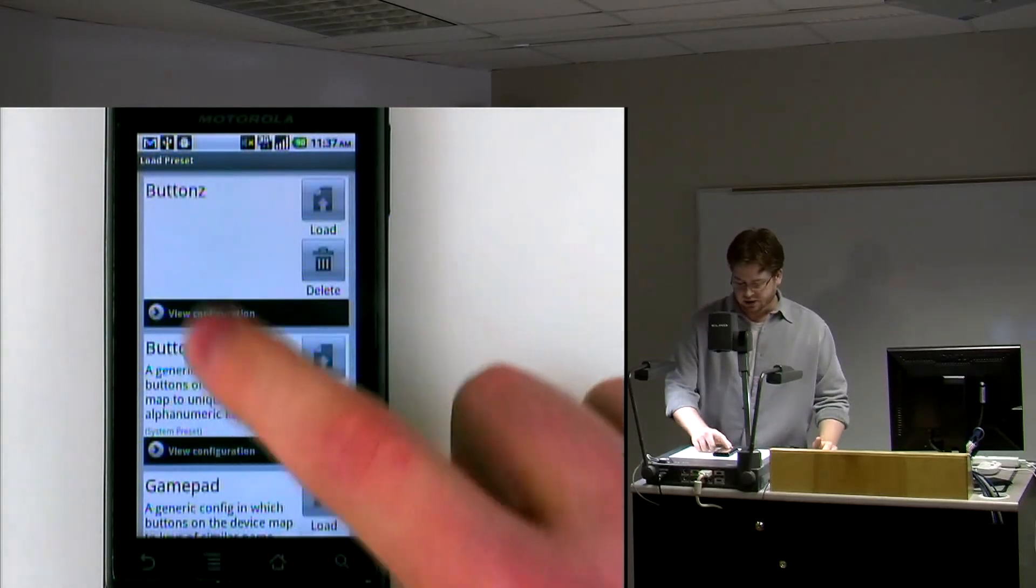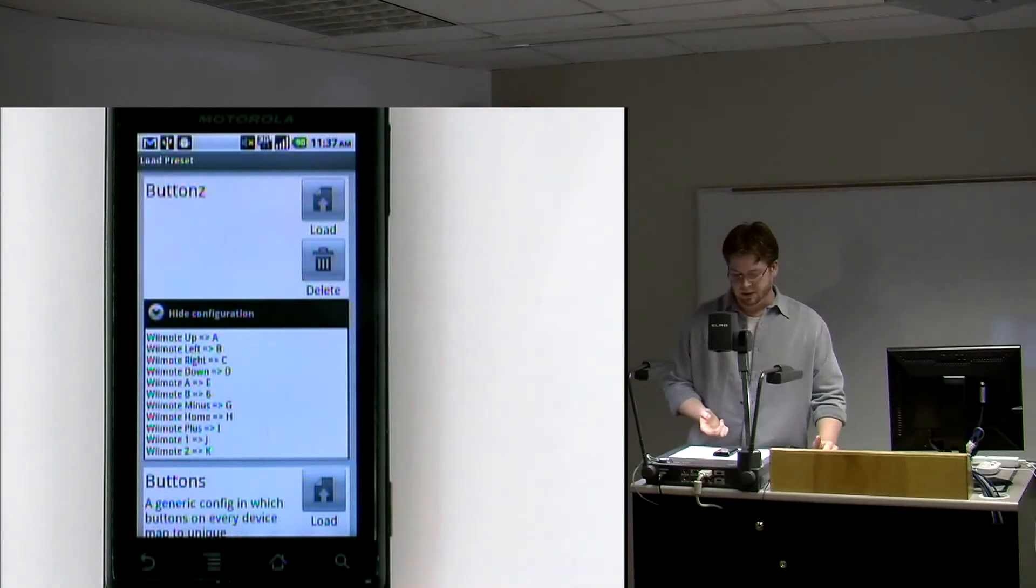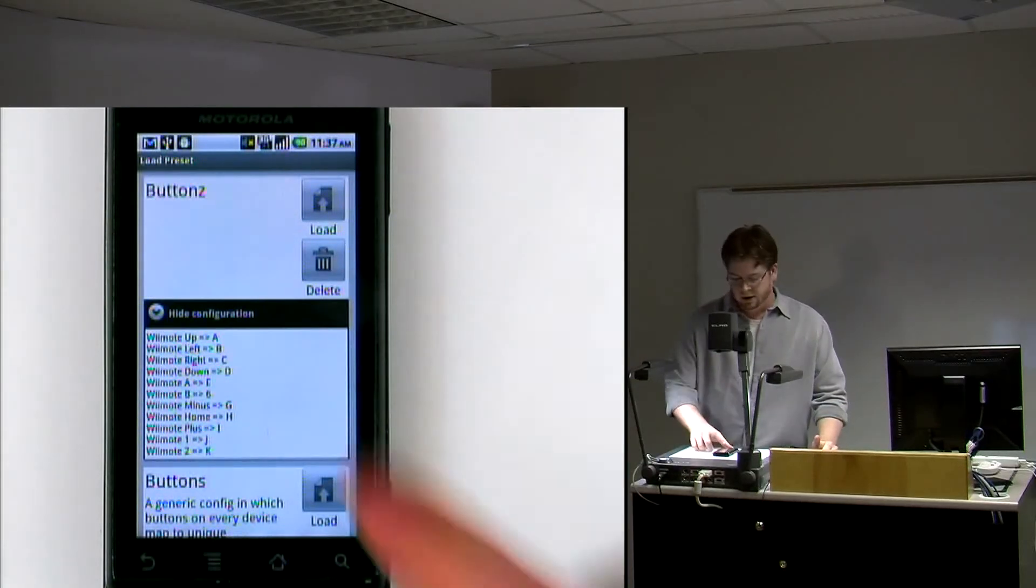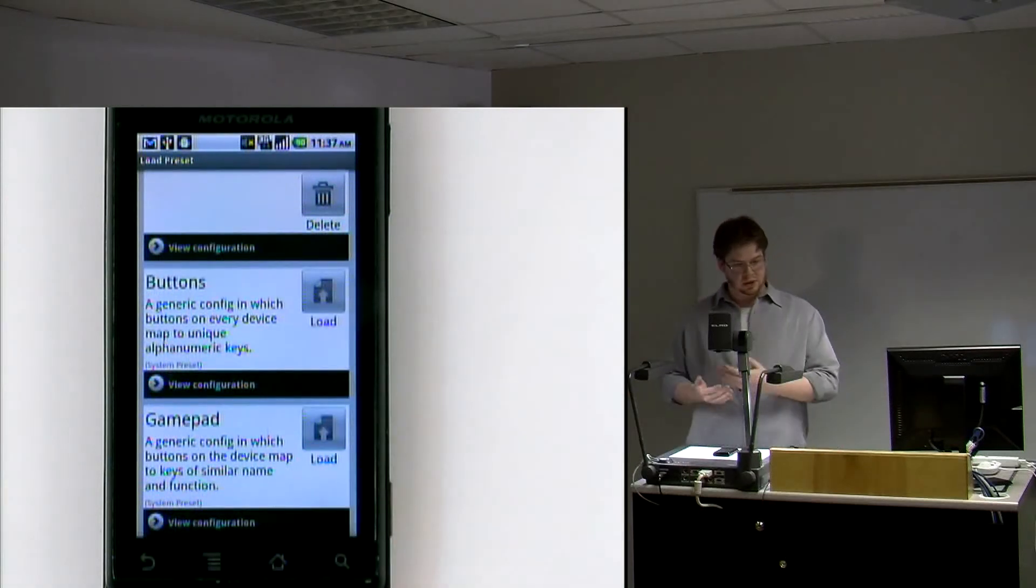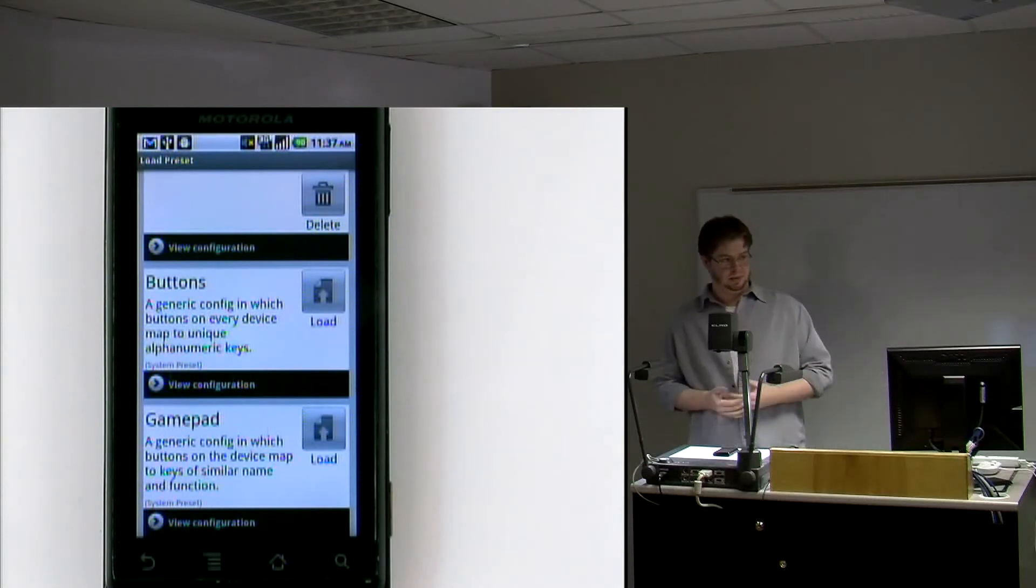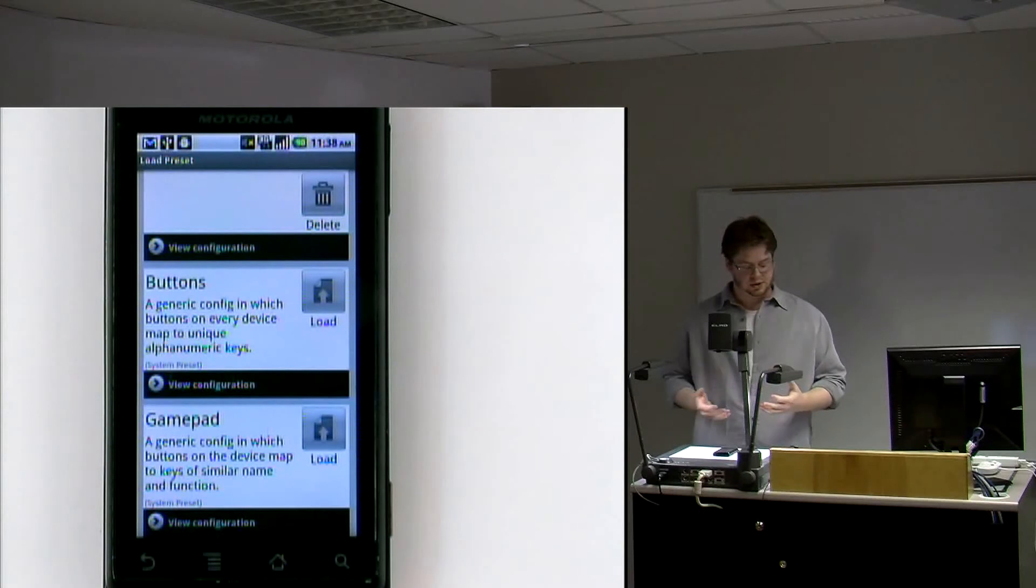On top of that, in the load screen you can actually view a current configuration by tapping that and dropping it down. You'll notice that the system configurations don't provide a mechanism for deleting because the system configurations are stored on the system partition, which isn't writable by the user. So there's no way of them deleting it because of how the Android OS works that way.